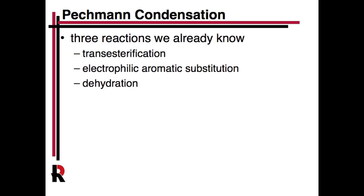The Peckman condensation — we're not going to go over the mechanism here, as that's one of the questions. There are three reactions, and it's stepwise. The first is a transesterification to replace the ethyl group with the phenol. Then electrophilic aromatic substitution forms the ring, with one of the ketone carbons acting as the electrophile. Finally, a dehydration gives the double bond.